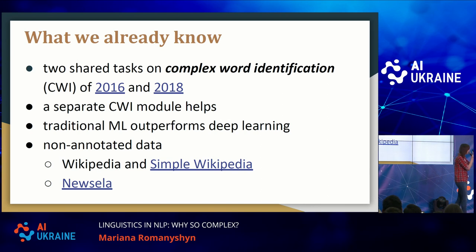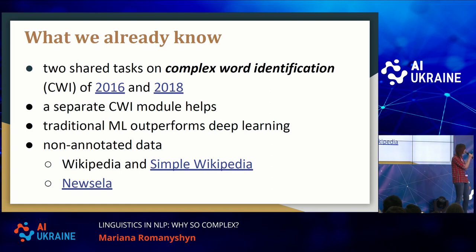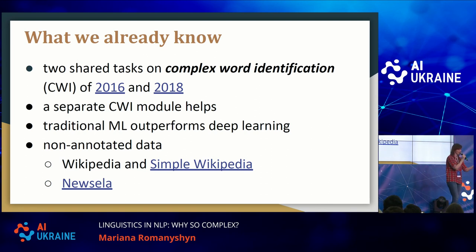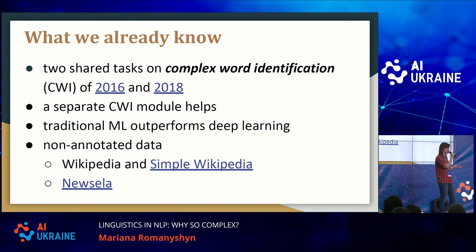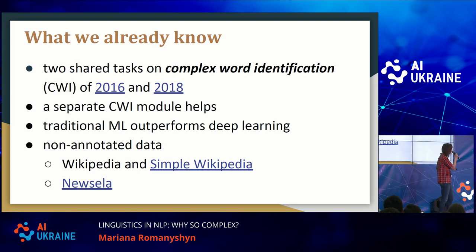Another finding is that even this year's shared task of 2018 — the report is already published — shows that traditional machine learning approaches outperform deep learning. This means we have a good opportunity to do some feature selection, to look at interesting linguistic features that can be used for our traditional machine learning approach to get even better results.